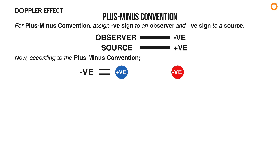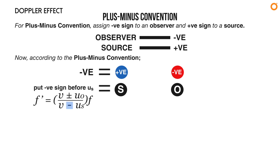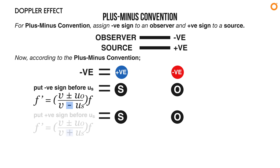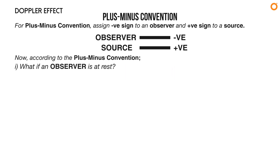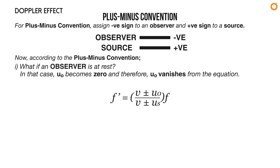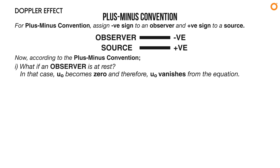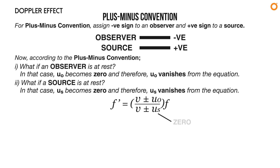Similarly, if positive moves towards negative, it becomes negative. When a source (considered positive) moves towards an observer (considered negative), put a negative sign before uₛ in Doppler's main equation. But if a source moves away from an observer, put a positive sign before uₛ. If an observer is at rest, u₀ becomes zero and vanishes from the equation. Similarly, if a source is at rest, uₛ becomes zero and vanishes from the equation.